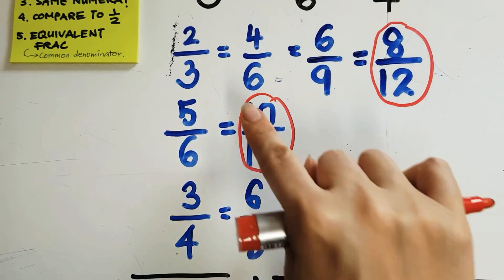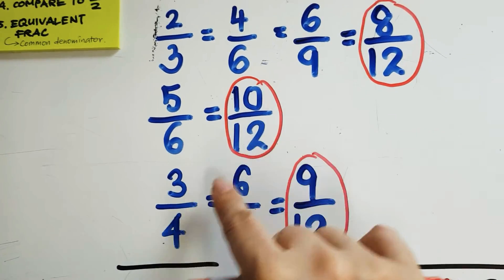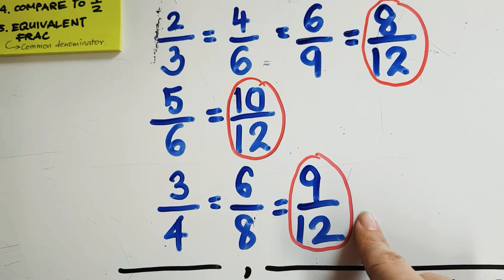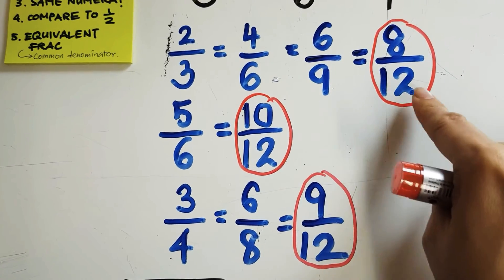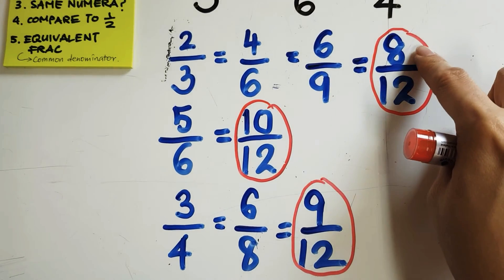Okay, now 2/3 is the same as 8/12, 5/6 is the same as 10/12, and 3/4 is the same as 9/12. Now, because the denominators are the same, the pieces are the same size. So, I just need to compare the numerators.